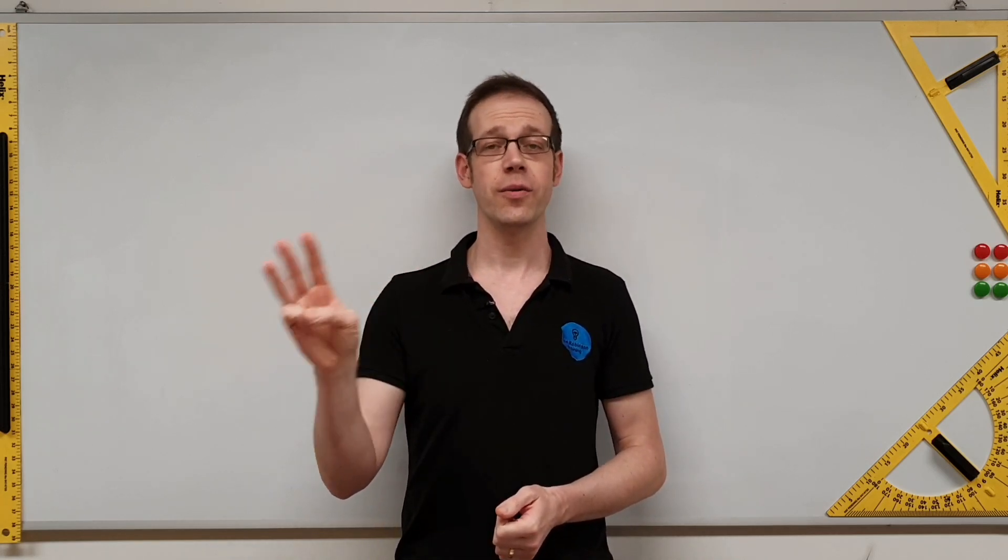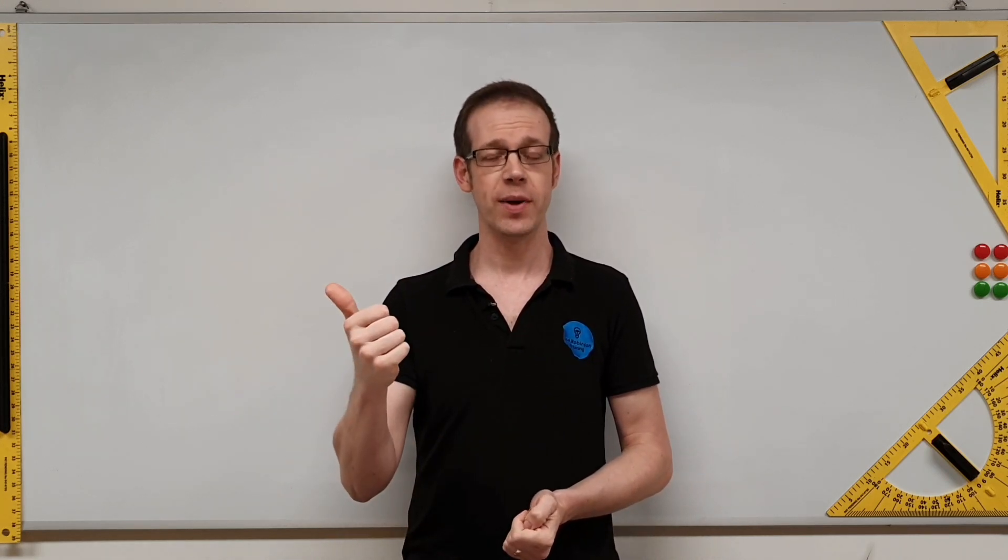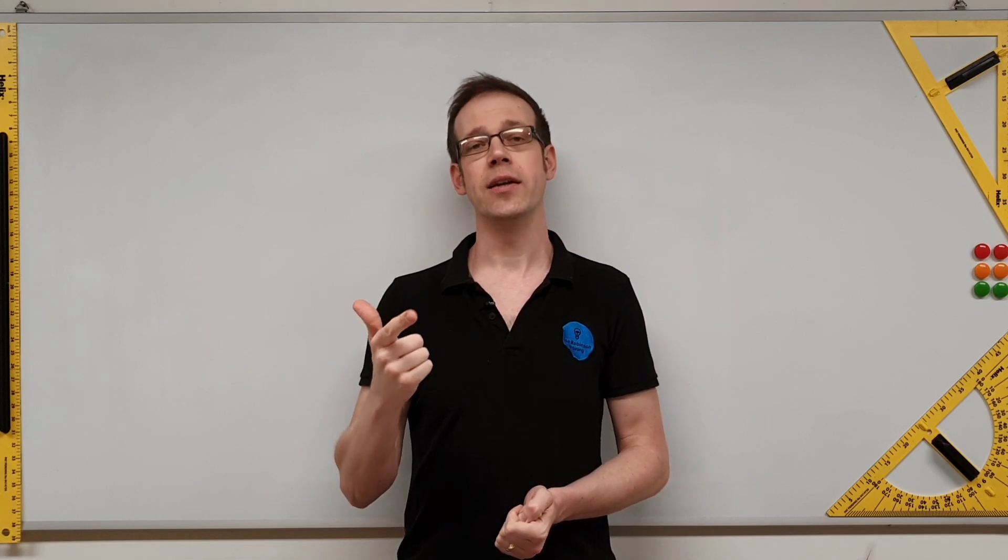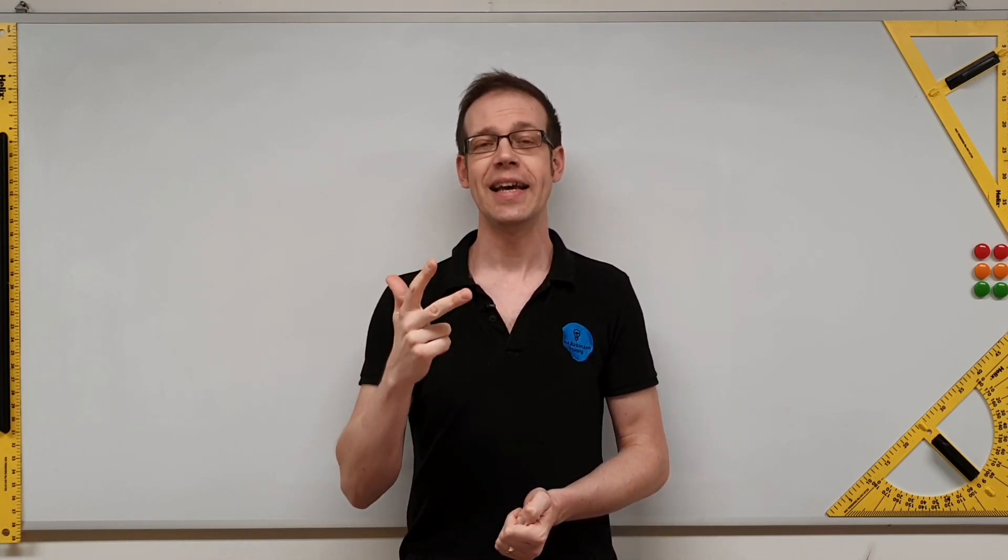And those three main ways also happen to be the same as the three effects of electricity. In that video we explored the chemical method of making electricity and the thermal method of making electricity. However in this video we're going to look at the third and probably the most important method of making electricity and that is the magnetic method.